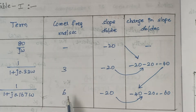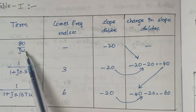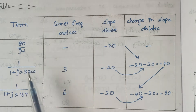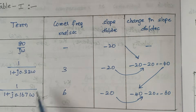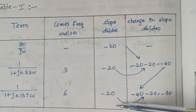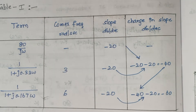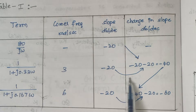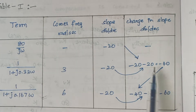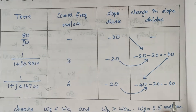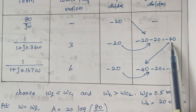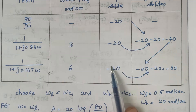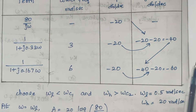The term contributing a corner frequency of 6 occupies the next place. Since ω is in the denominator, it contributes a slope of −20 dB/decade. Similarly, the other denominator terms also give slopes of −20 each. To find the change in slope, we accumulate: at ωc1 it becomes −40 dB/decade, and at ωc2 it becomes −40 − 20 = −60 dB/decade.